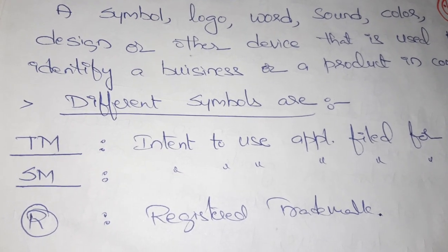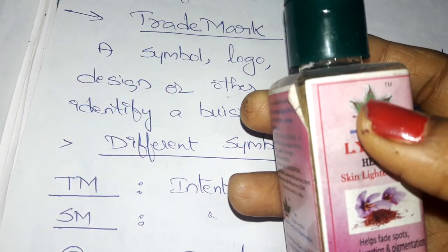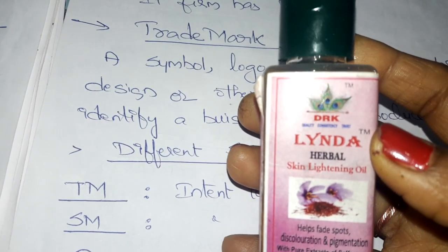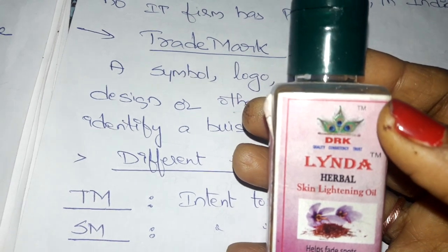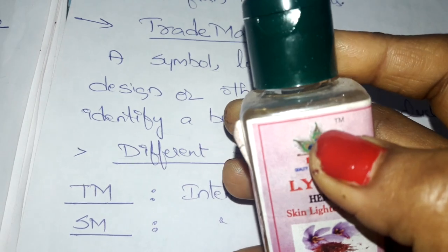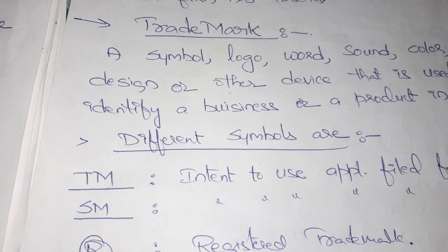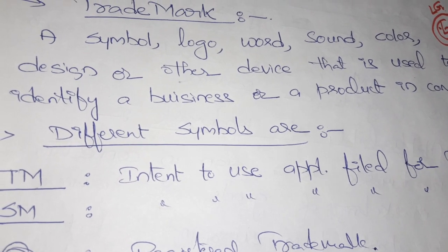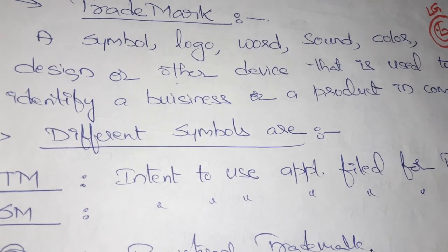For example, if you see a product with the TM symbol on it, it means that the product has applied for a registered trademark but has not yet received a legal certificate. SM is used as a symbol for services — for example, geo services, ATEL services, and so on.